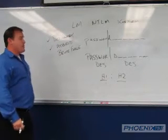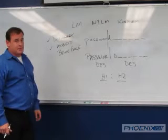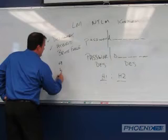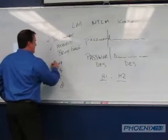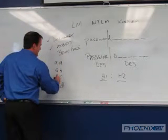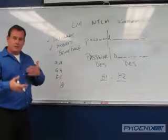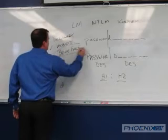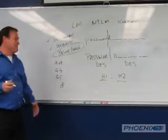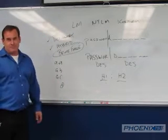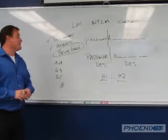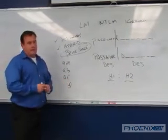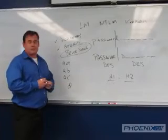In brute force, we try every combination of characters until we get a match — A, B, C, D... AA, AB, AC, AD — it's just like the odometer in a car. We'll exhaust the entire key space, and this method is guaranteed success. The problem is it could be a quadrillion years from now. Brute force attacks take the longest but are guaranteed success — however, they may not crack the password within a usable time frame.